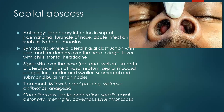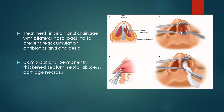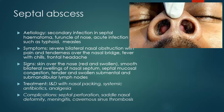Treatment of septal abscess includes incision and drainage with nasal packing. We insert glove drains before doing the nasal packing so that pus can continue draining until completely drained. Then we keep the patient on systemic antibiotics and analgesia. Complications include septal perforation — if you make incisions at the same level on either side during drainage, sometimes you create a septal perforation.